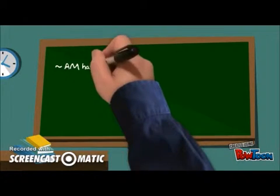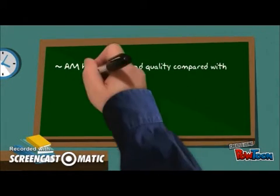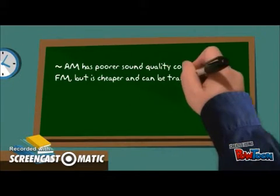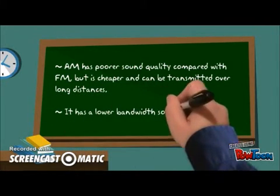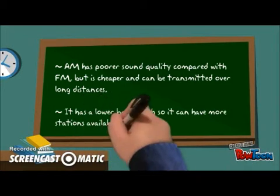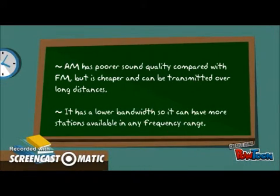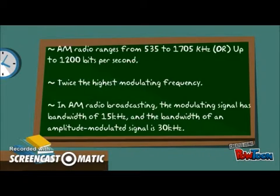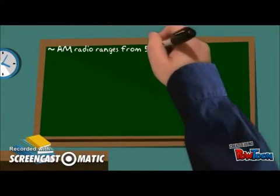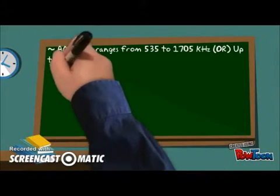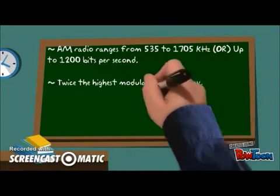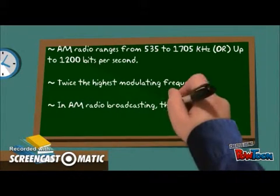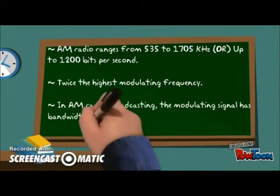AM has higher sound quality compared with FM, but it is cheaper and can be transmitted over a long distance. It has a lower bandwidth, so it can have more stations available in any frequency range.